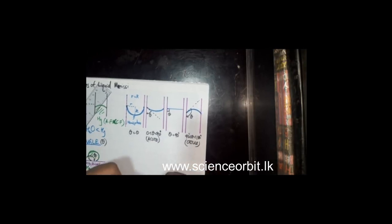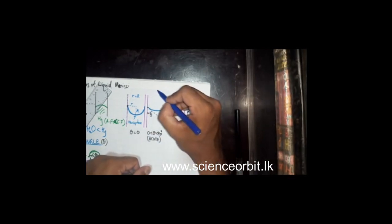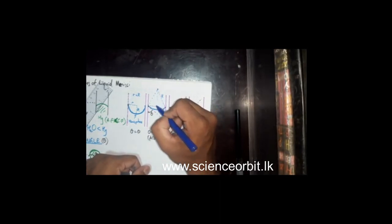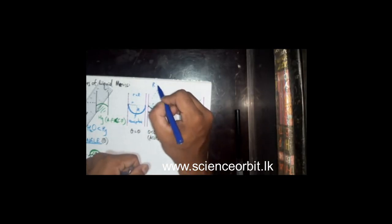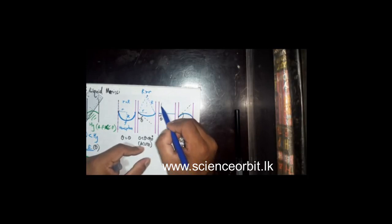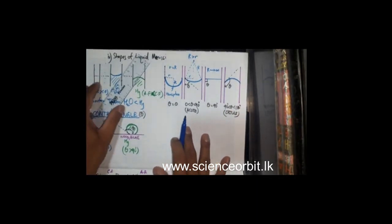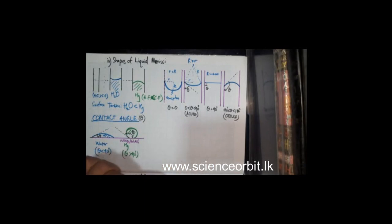One more thing: if you take this particular meniscus, it is a part of a large circle, with the center somewhere outside and capital R as the radius of the meniscus, while small r is the radius of the tube. For an acute meniscus, capital R is larger than small r. When theta is 90° and the surface is flat, capital R is infinitely large.